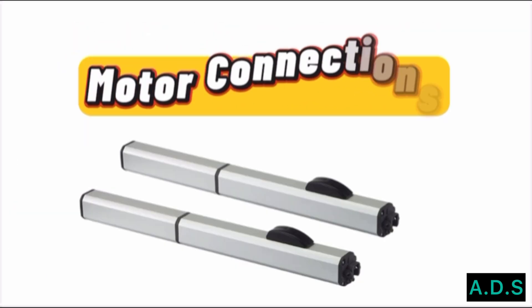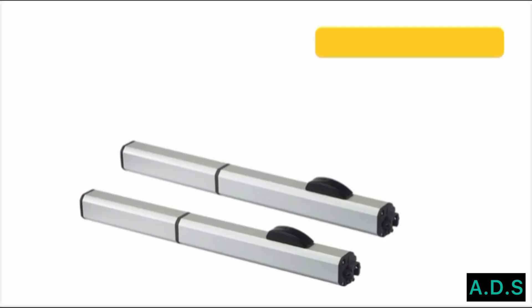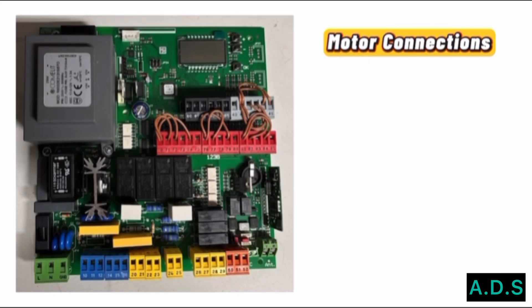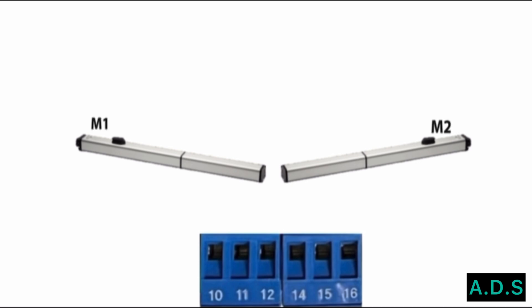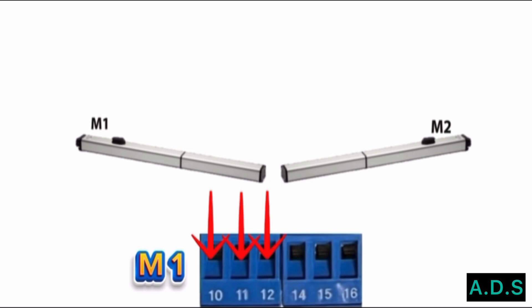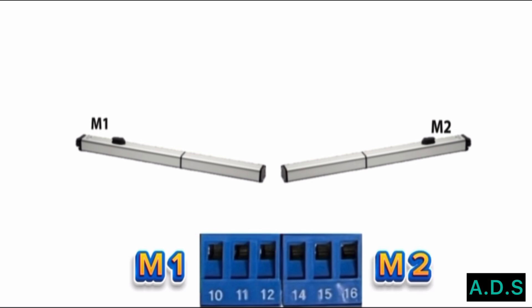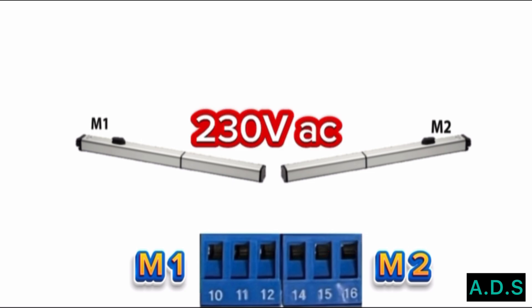Motor connections. Motor 1 block: terminals 10, 11, and 12. Motor 2 block: terminals 14, 15, and 16. The power supply for the motor is 230 volt AC.